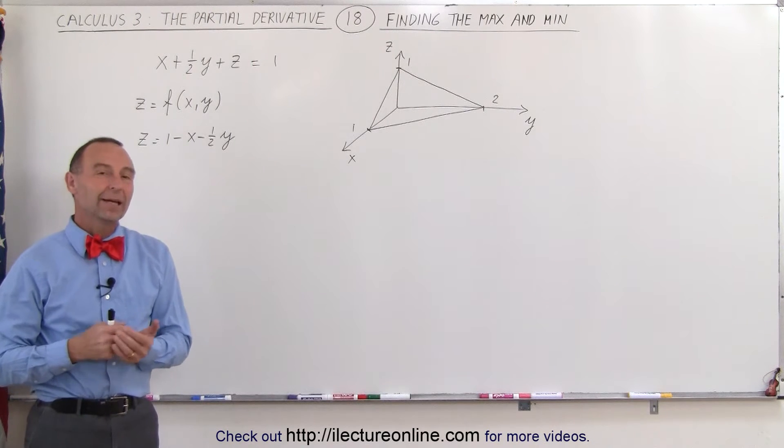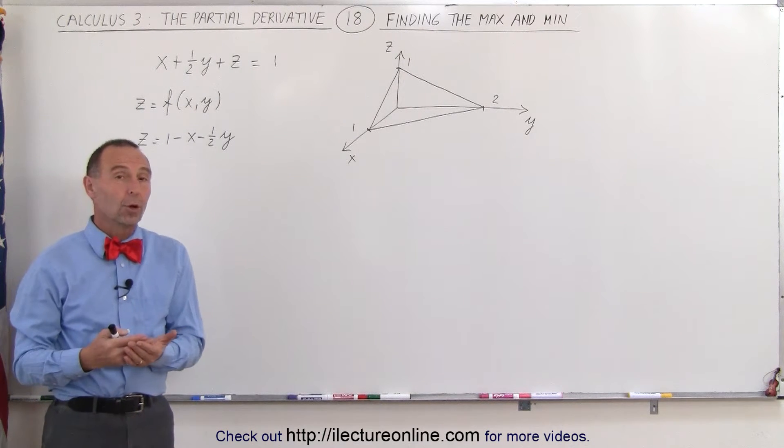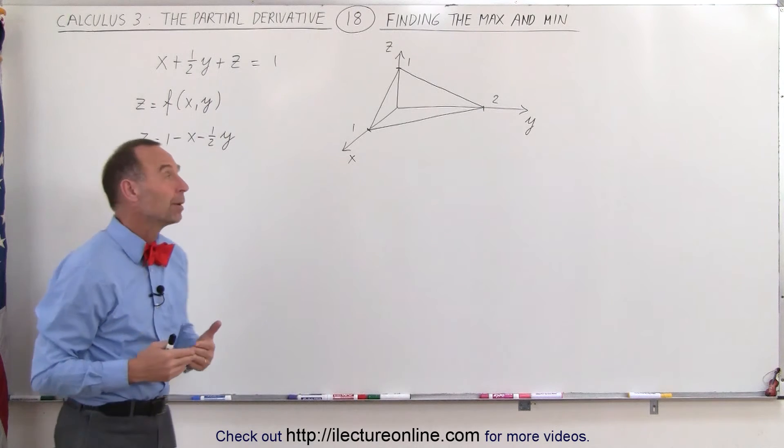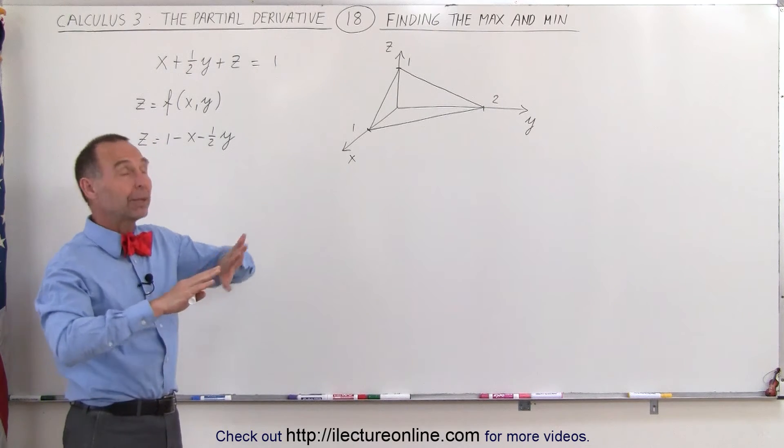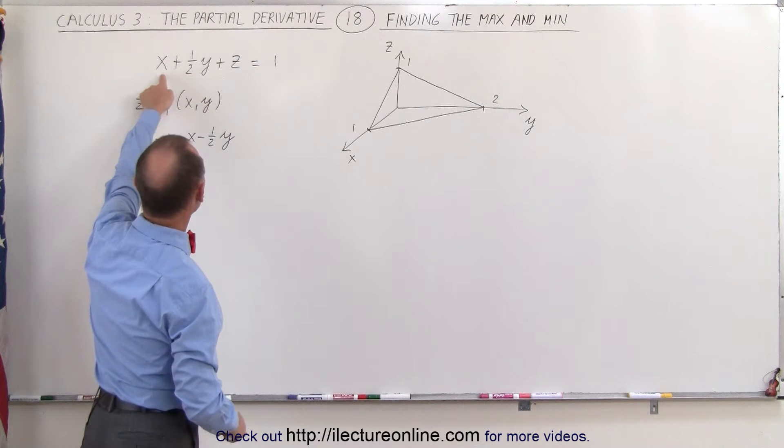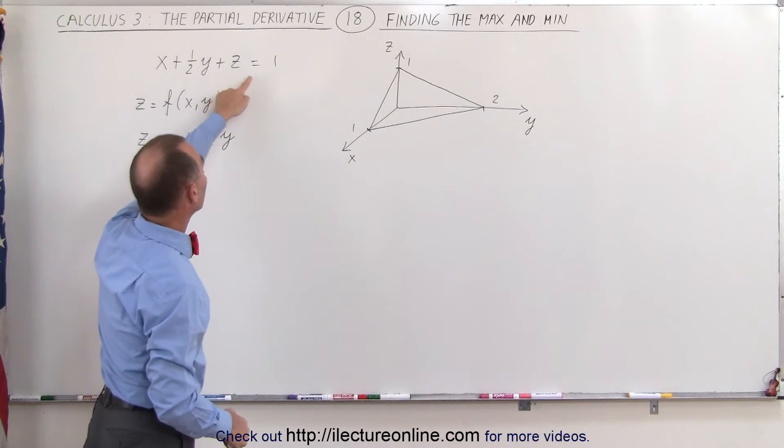Welcome to Electronline. Here I wanted to show you an example where there is no maximum or minimum value. We simply have a plane in space. The equation describing the plane is x plus one-half y plus z equals 1.